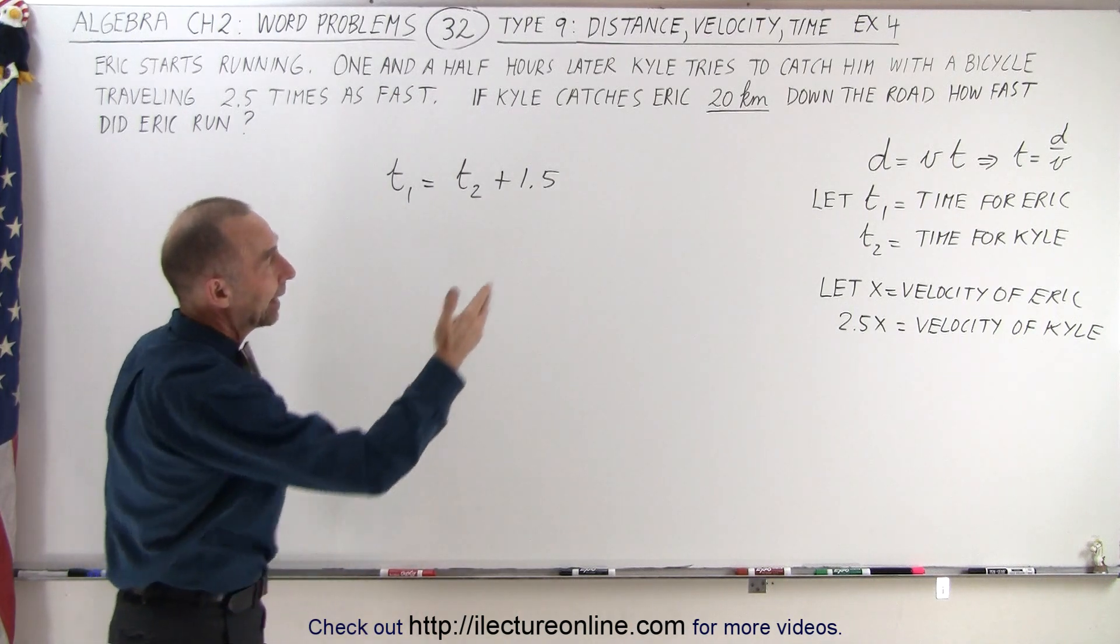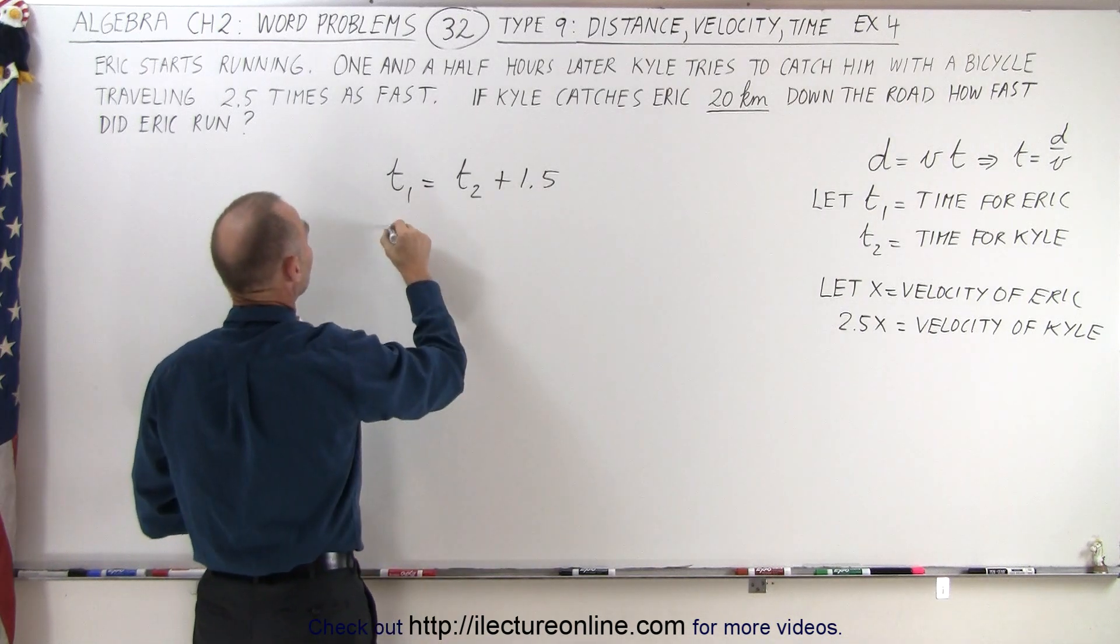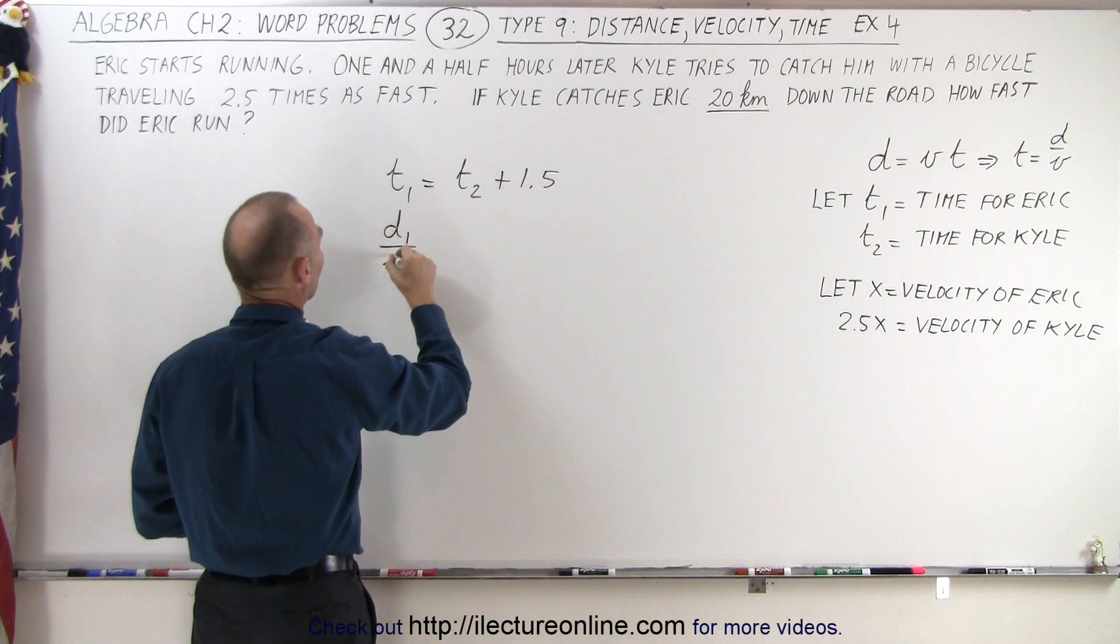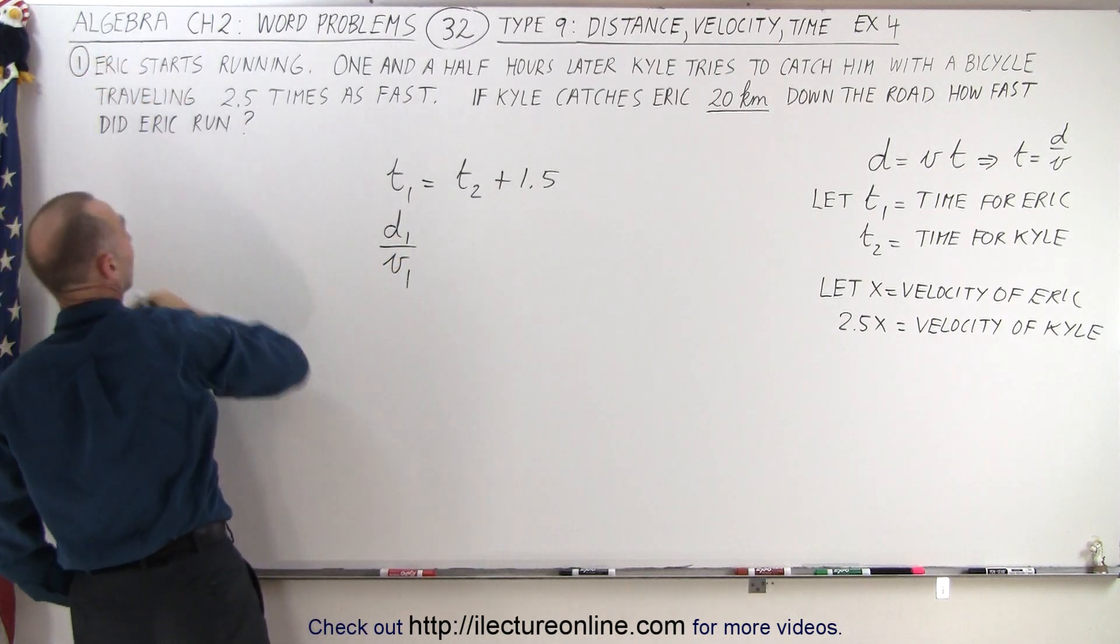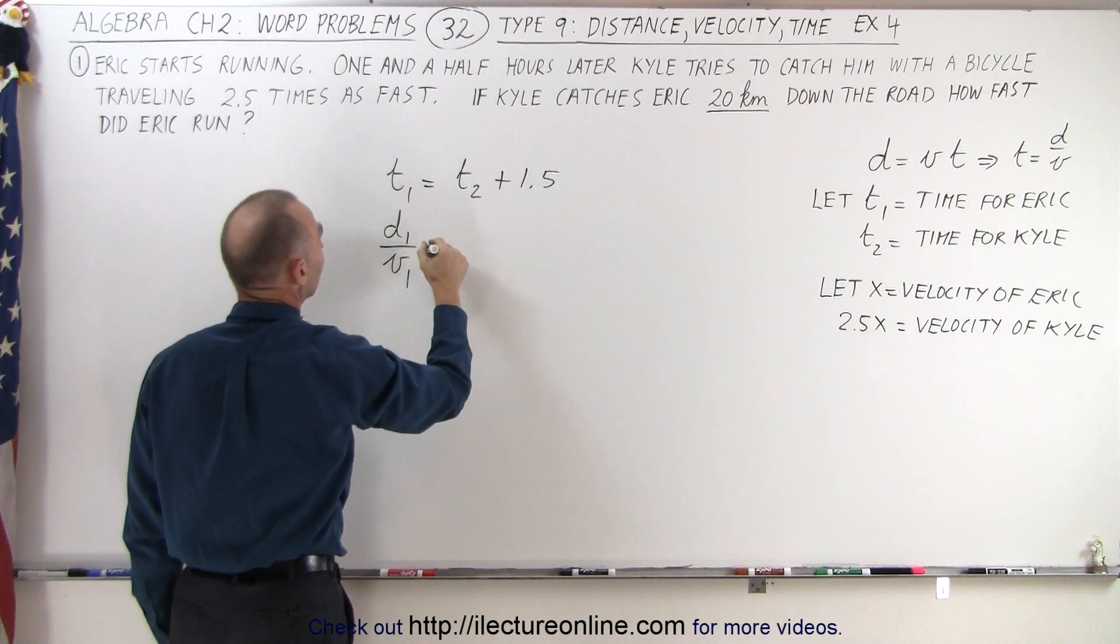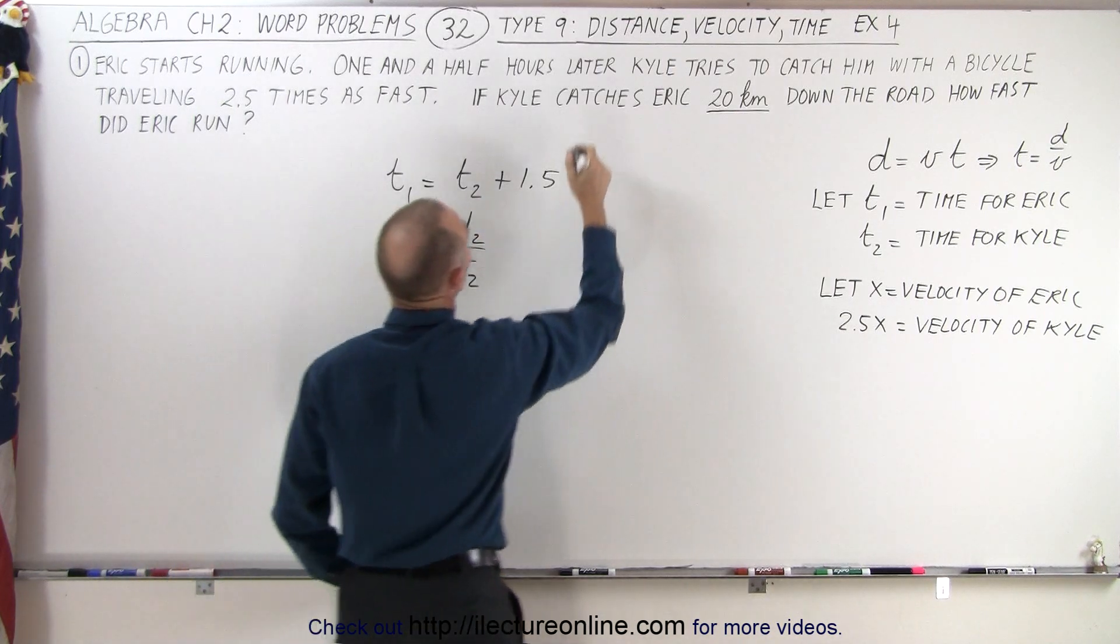So there's our starting equation, and then we realize that if we replace time by distance over velocity, that distance one over velocity one is the information about Eric, is equal to distance two divided by velocity two, which